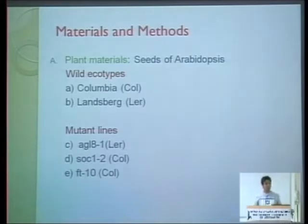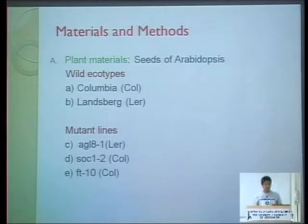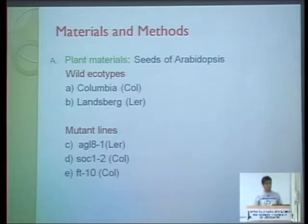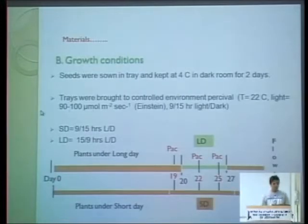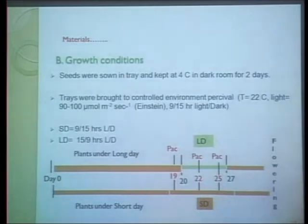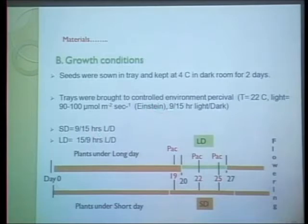For plant materials, we used seeds of five types: two wild types — Columbia and Landsberg — and three mutant lines: AGL8-1 (also called FUL) on the Landsberg background, and SOC1 and FT on the Columbia background. Plants were sown on trays, kept at four degrees centigrade in a dark room for two days, then transferred to a controlled environment chamber at 22 degrees centigrade with approximately 90–100 µmol/m²/s light intensity.